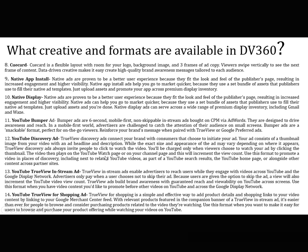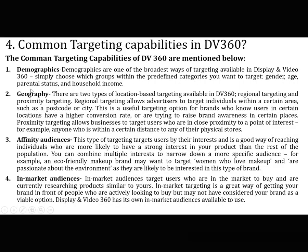Overall, there are 14 primary creative formats in DV360. Moving to common targeting capabilities in DV360: the first is Demographics — one of the broadest targeting options available, allowing you to choose predefined categories such as gender, age, parental status, and household income. The second is Geography, with two types of location-based targeting: Regional Targeting, which allows advertisers to target individuals within a certain area such as a postcode or city.